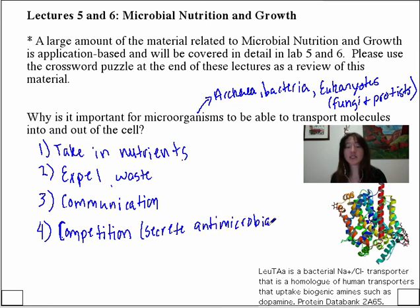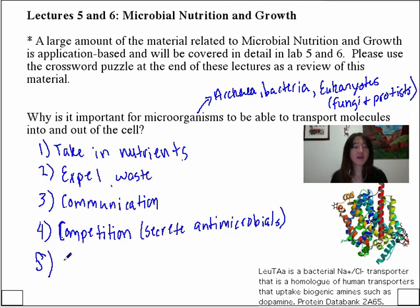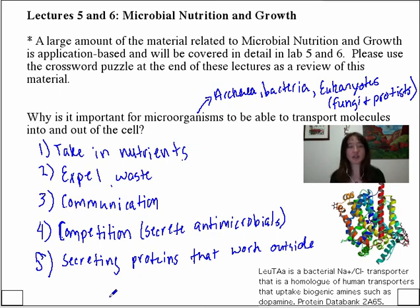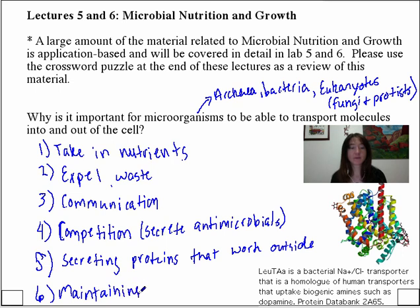There are also compounds called bacteriocins that are literally like little bacterial machine guns — they poke holes into competing bacterial membranes. We could also think about exporting proteins that do their job outside of the cell. And maintaining gradients, such as a proton motive force or another ion gradient involved in transport. I'd encourage you to keep adding to this list on your own.